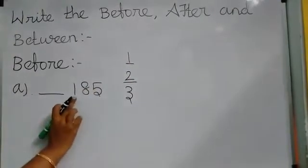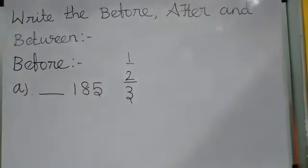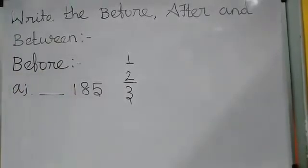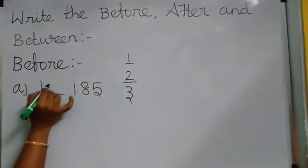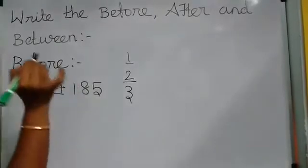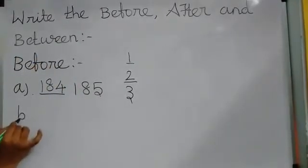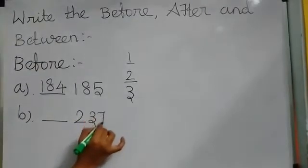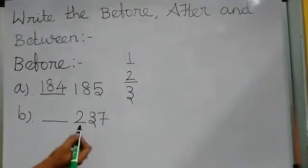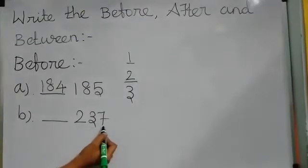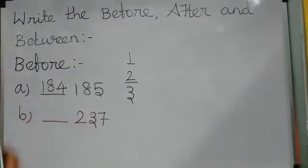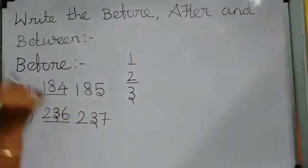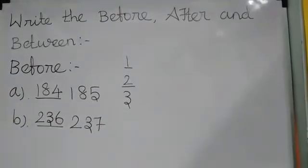What is the number? 185. So what is the before number? Very good — 184. Next: 237. What comes before? 236. Very good.